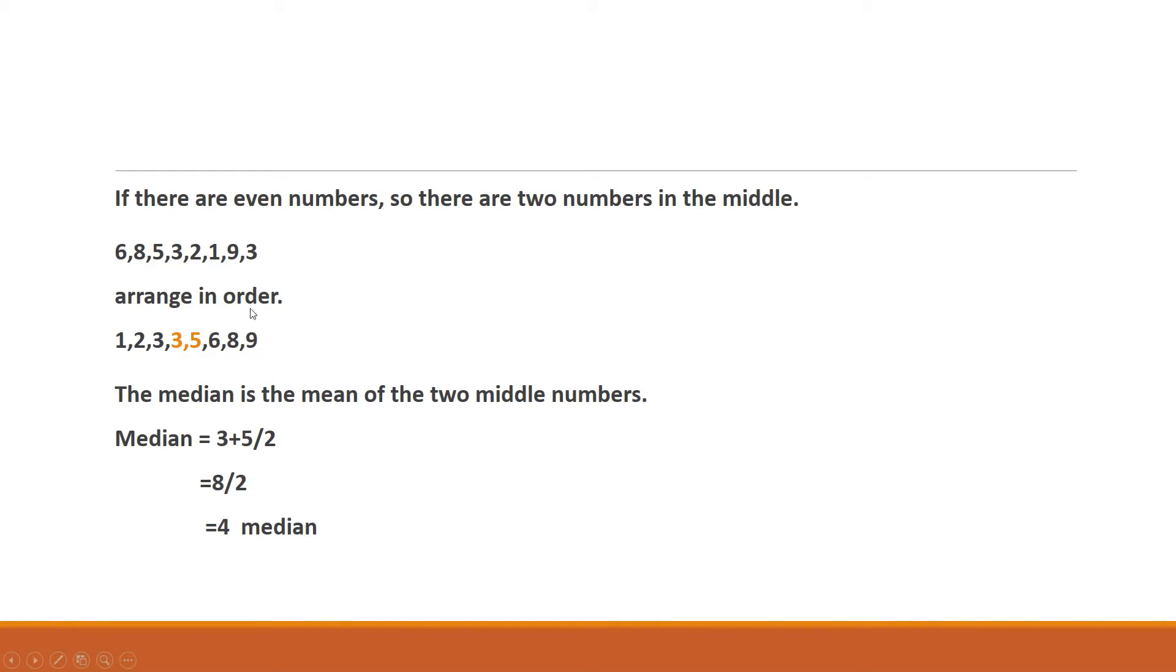First we have to arrange in order 1, 2, 3, 3 because 3 occurs 2 times, 5, 6, 8, 9. Then see these 2 come in the middle. So the median is the mean of the 2 middle numbers: 3 plus 5 divided by 2. So 3 plus 5 equals 8 divided by 2 equals 4 is the median.